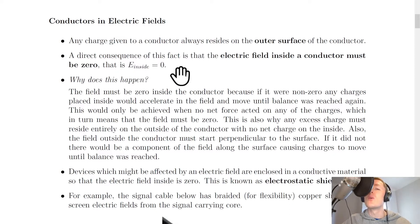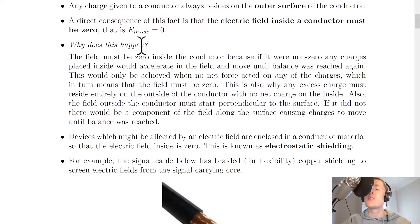And this is an important rule that you have to remember. So the electric field inside a conductor must always be zero. Why does this happen though? Why does the charge always reside on the outer surface of the conductor?